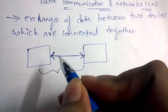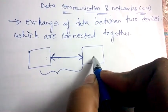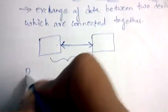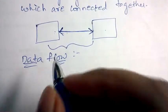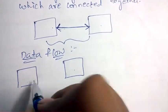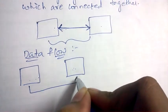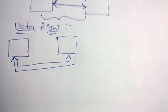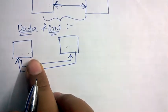Communication is nothing but the flow of data. Data flow means there will be a flow of data between two devices — this device may send information to that device, or that device may send information to this device. This is called data flow, meaning the flow of data between devices.